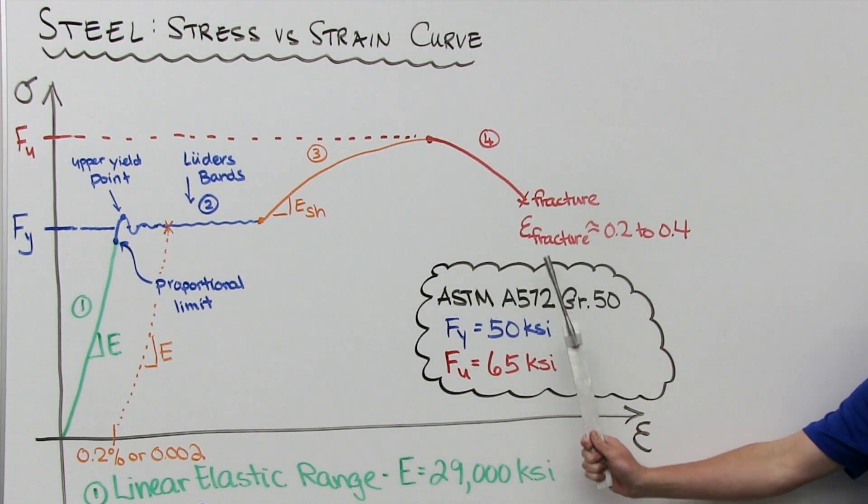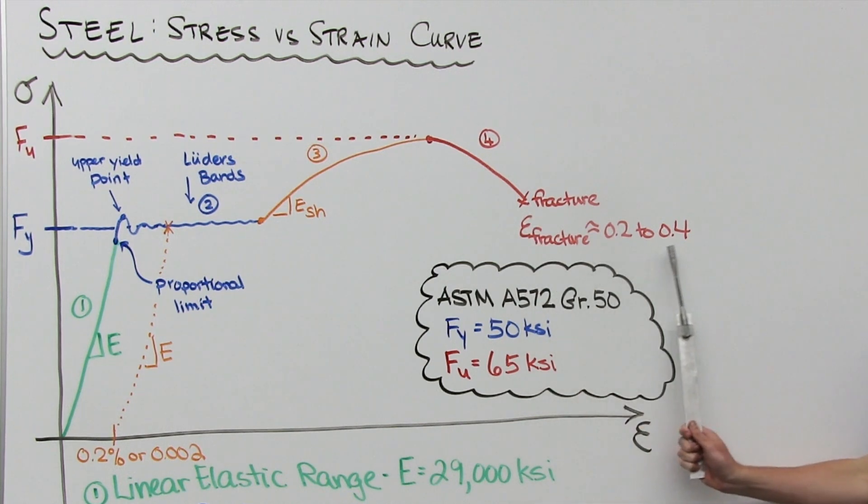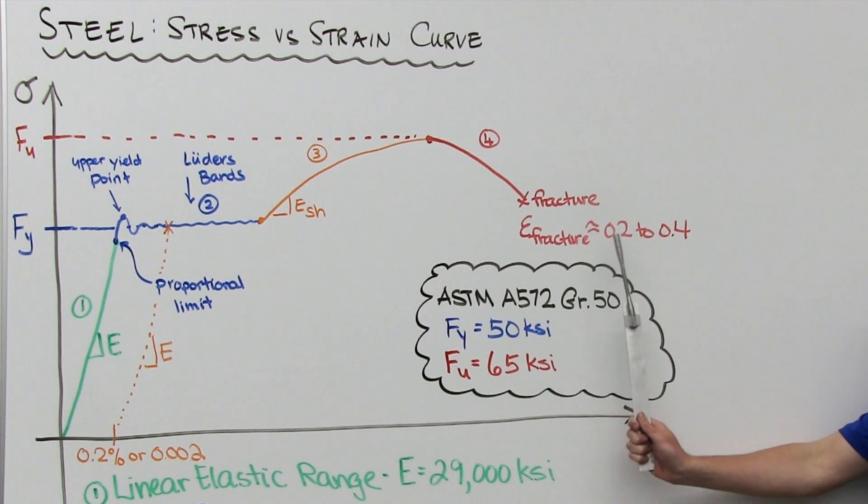And again, you can check out AISC tables 2-4 and 2-5 for a quick reference of the values for each material. Steel typically fractures at a strain of 20 to 40 percent. But again, you can get full details for each grade by looking up the appropriate ASTM spec, keeping in mind that you usually lose ductility as you increase strength.